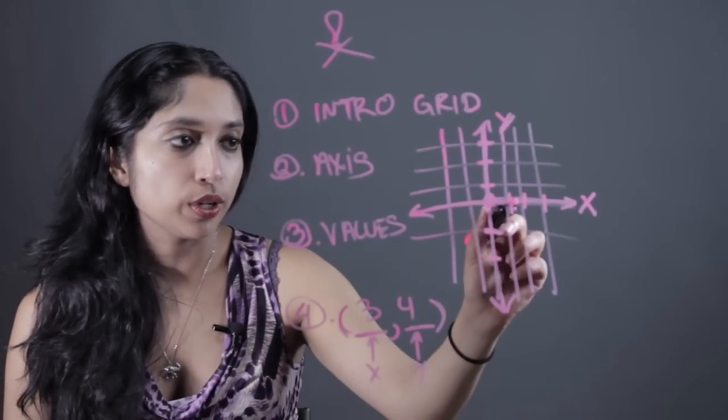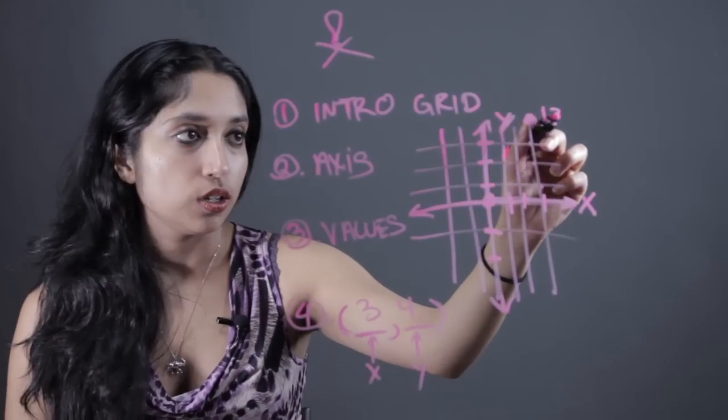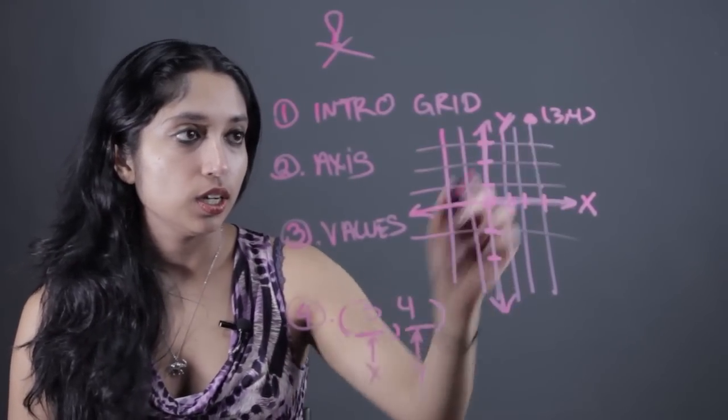Show them how to plot it by going over three. One, two, three. One, two, three, four. Three comma four. You just count over x and y units and you'll get your point.